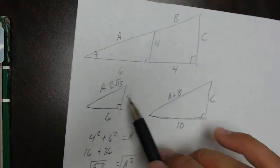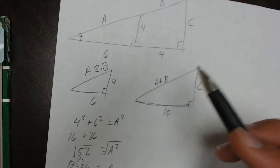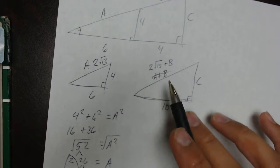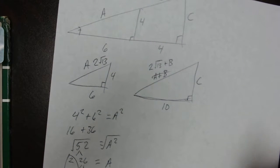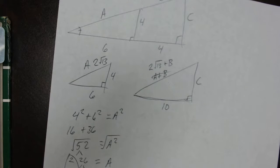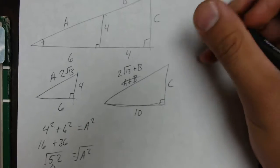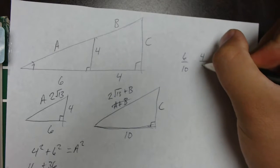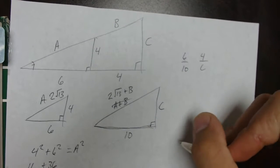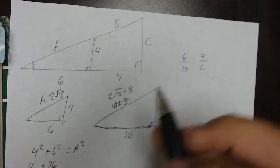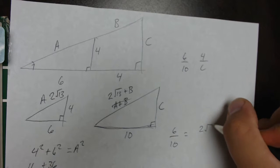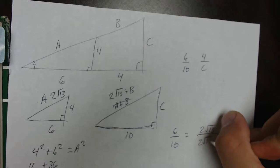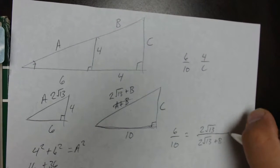Once we have that answer, we can also fill that into here. Instead of keeping this as A plus B, we'll write this as 2 times the square root of 13 plus B. That is our new hypotenuse on this side. Now we're going to use ratios again to solve for the missing part. We'll use 6 and 10 as our base ratio. We can say 6 is to 10 as 4 is to C. And then we can say that 6 is to 10 as 2 times the square root of 13 is to 2 times the square root of 13 plus B.